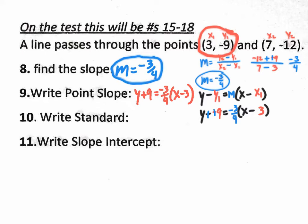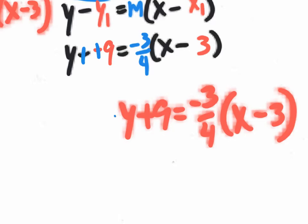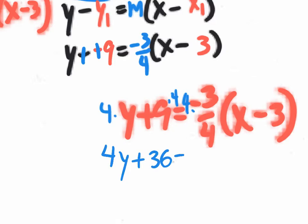Now we need standard form. Standard form is Ax + By = C, which means no fractions. Since we have a fraction, multiply everything by the denominator 4 — multiply the y, the 9, and the fraction, but not the inside of the parentheses. The parentheses protect x and -3 because of the distributive property. The new equation becomes 4y + 36 = -3(x - 3), since the 4s cancel.